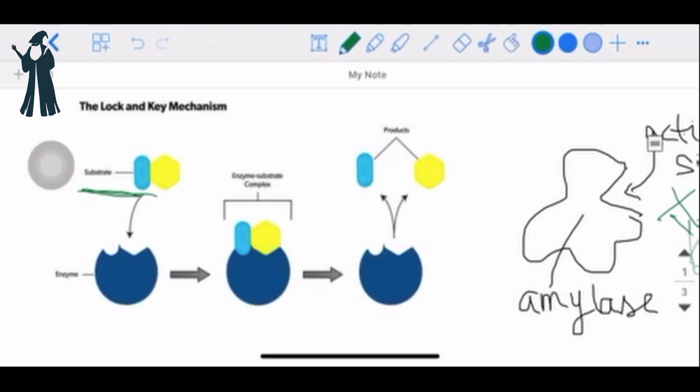Once they bind to each other, they form something called the enzyme substrate complex. This is also referred to as the ES complex. And then the reaction takes place. Once the reaction takes place, you can notice a similarity here. This area and this area is the same. That means the shape of the active site is unaltered. Therefore, it can catalyze more reactions.